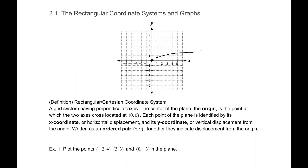Let's go ahead and label that. Each point in the plane is identified by its x-coordinate, or horizontal displacement, and its y-coordinate, the vertical displacement from the origin. We'll write that as an ordered pair (x, y), which indicates where in this grid we lie, and that is how far we are displaced from the origin.